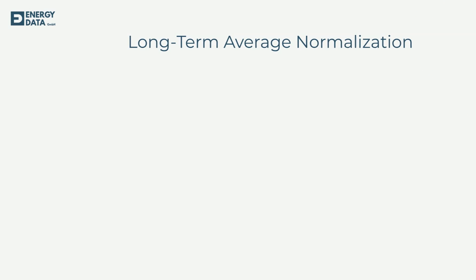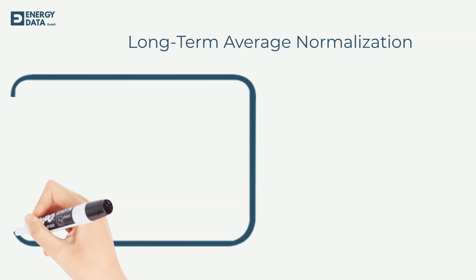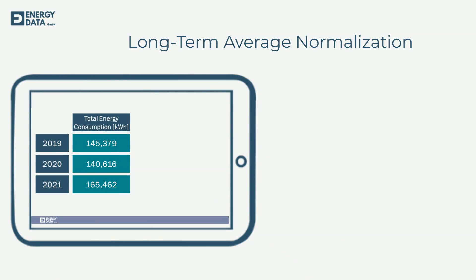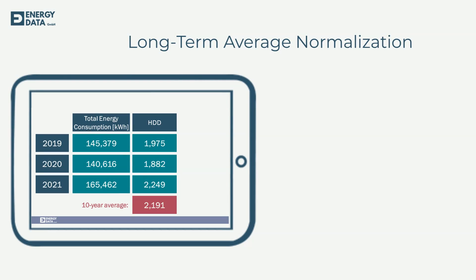The common approach is normalization by using the long-term average. We go back to our example but now we add another variable: the 10-year average of heating degree days. Of course, location, base temperature, and length of the period should be the same. Our free degree day calculator will calculate the long-term average with just one click.